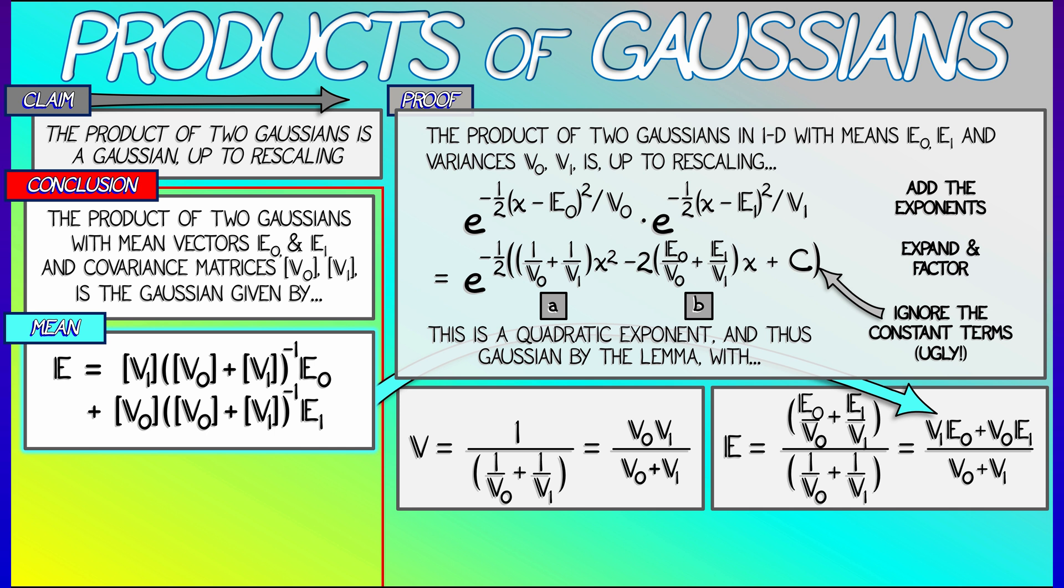Now that sounds crazy, but if you look at the structure of the expression for e in 1D, it fits this exactly. We can no longer just divide by v0 plus v1. We have to add those covariance matrices together, then take the inverse, and be careful with the order of multiplication.